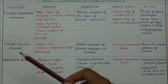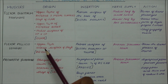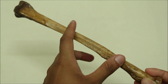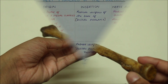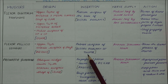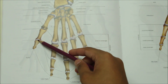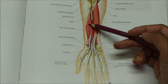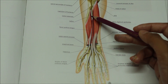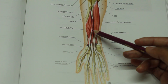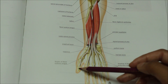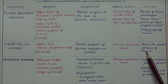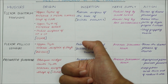Moving on to the next muscle, we have the flexor pollicis longus. It originates from the upper three-fourths of the anterior surface of the shaft of the radius, and inserts into the palmar surface of the distal phalanx of the thumb. It is supplied by the anterior interosseous nerve. Its action is that it flexes the distal phalanx of the thumb.